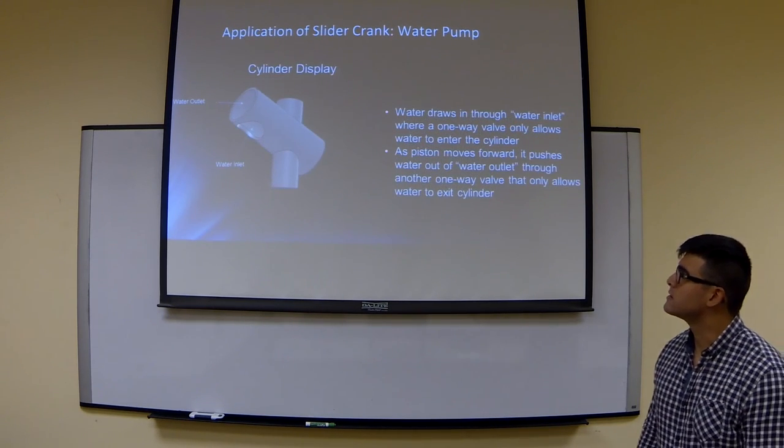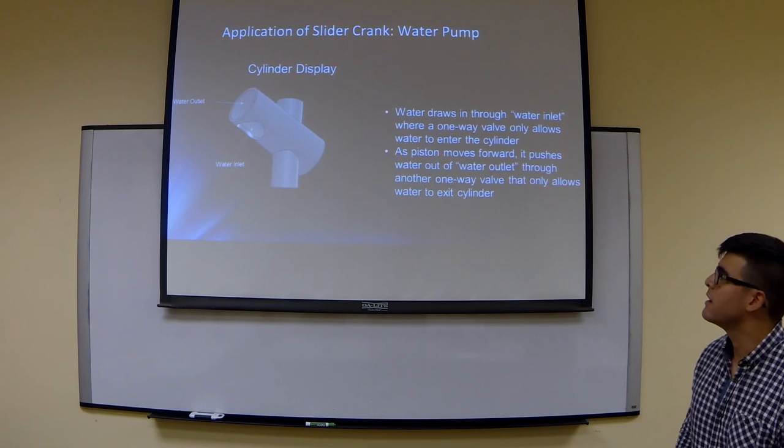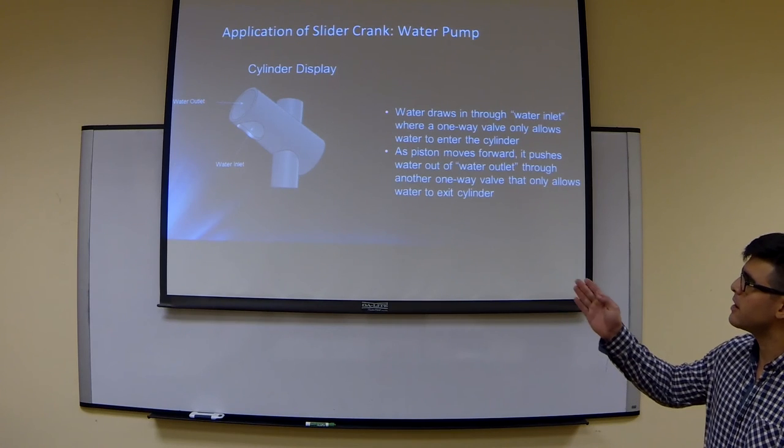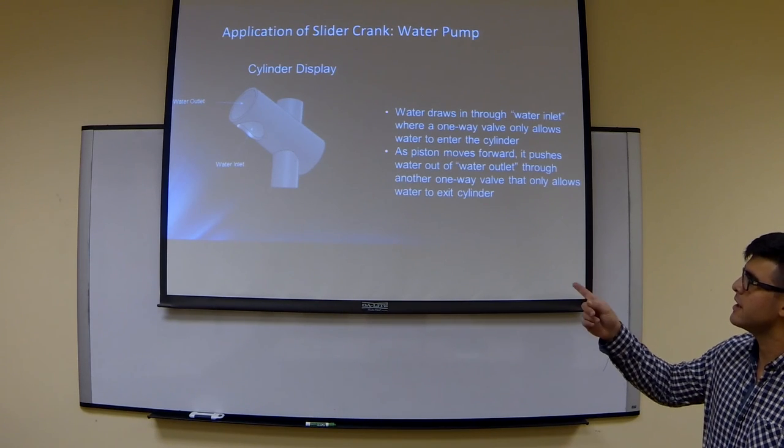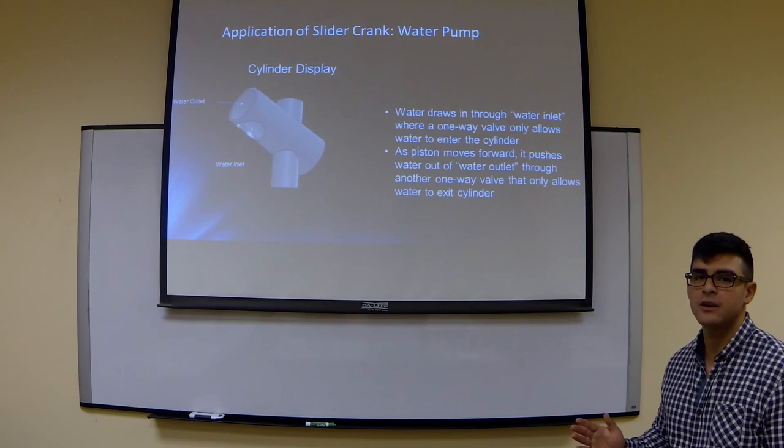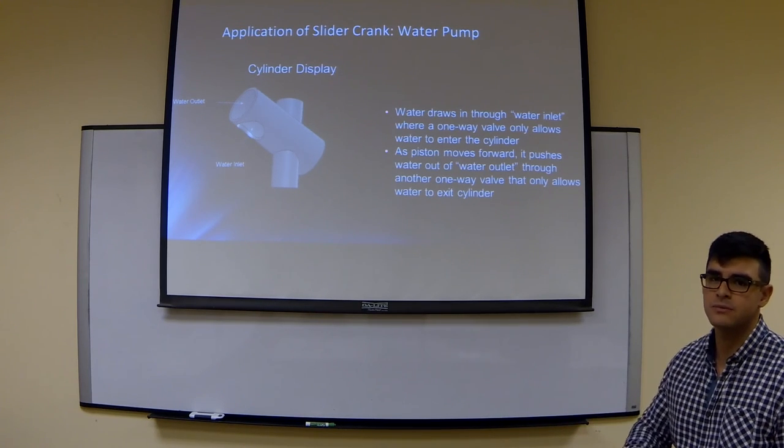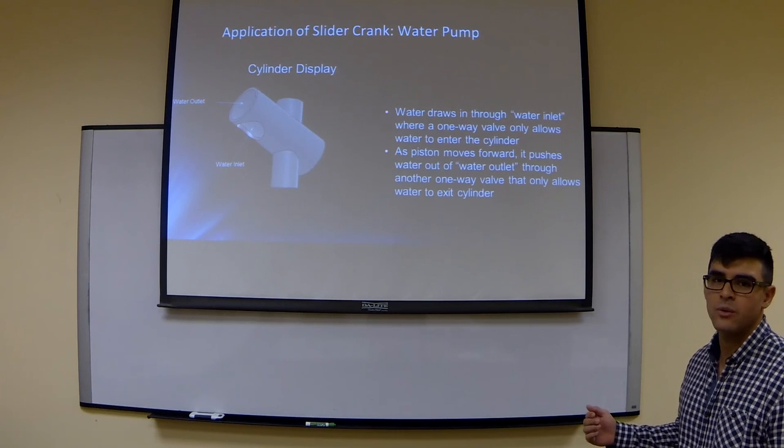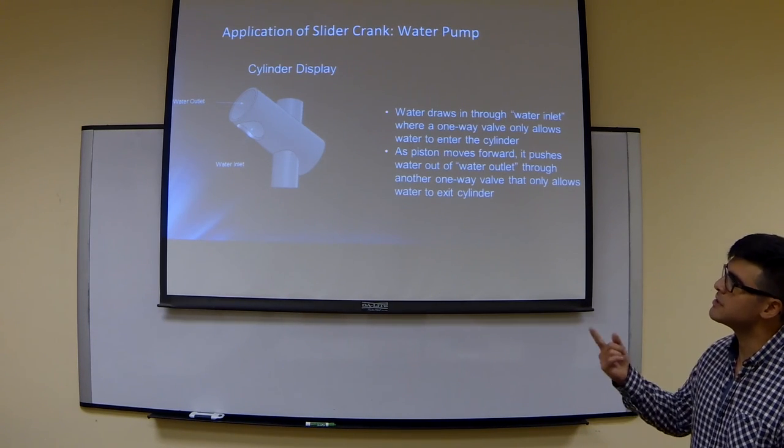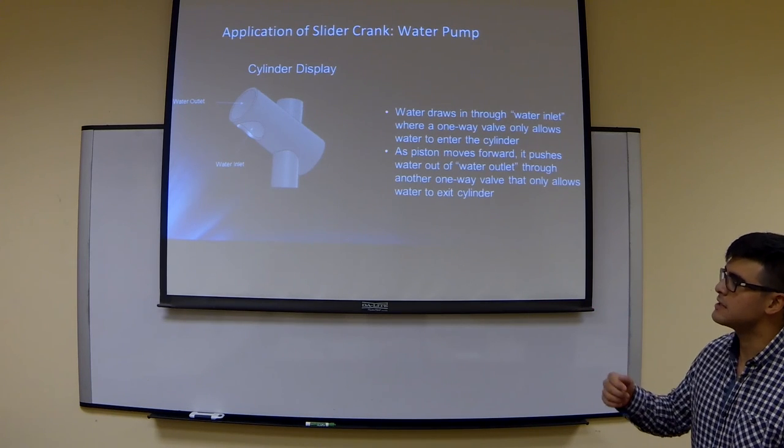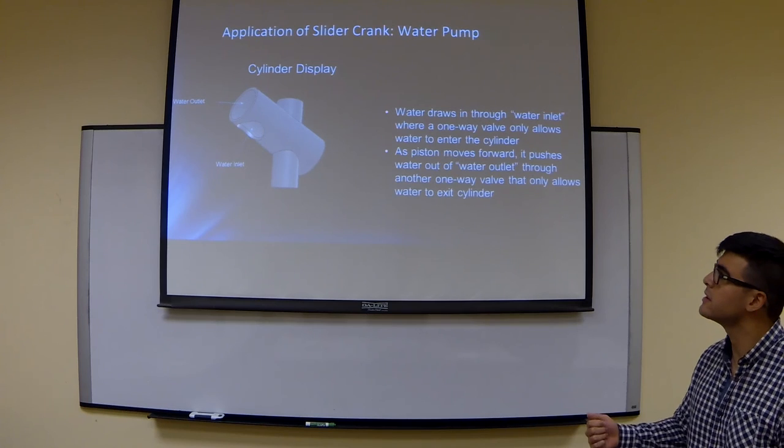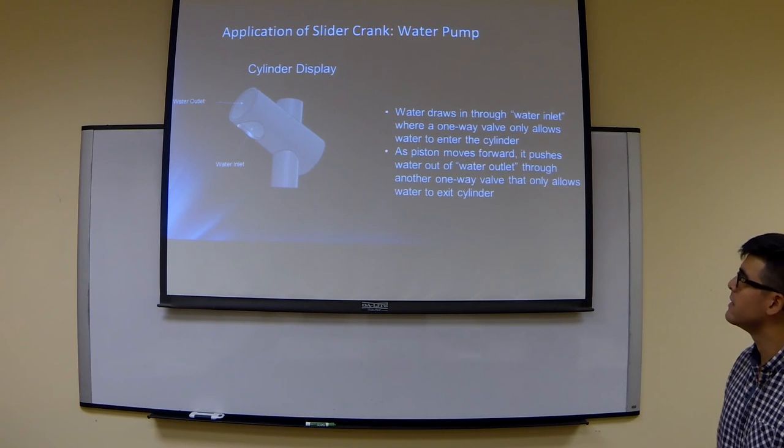The way that our pump works is that as a close-up of our cylinder, you can see that the water inlet is on the bottom of the cylinder, and the water outlet is on the end of the cylinder. The water inlet will have a one-way valve that only allows water to be drawn in through the cylinder as the piston moves backwards, but it doesn't allow water to be pushed back out of that valve as the piston moves forward. The opposite is true for the water outlet. As the piston moves back, water cannot be drawn into the cylinder, but as the piston moves forward, it will push the water out of the outlet.